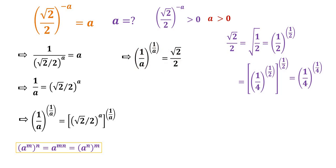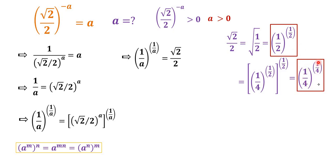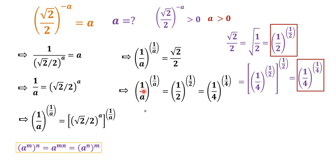So this equation continues: square root 2 over 2 equals (1 over 2) to the power of 1 over 2, which equals (1 over 4) to the power of 1 over 4, which equals (1 over 8) to the power of 1 over 8, and so on. Now we have two cases.